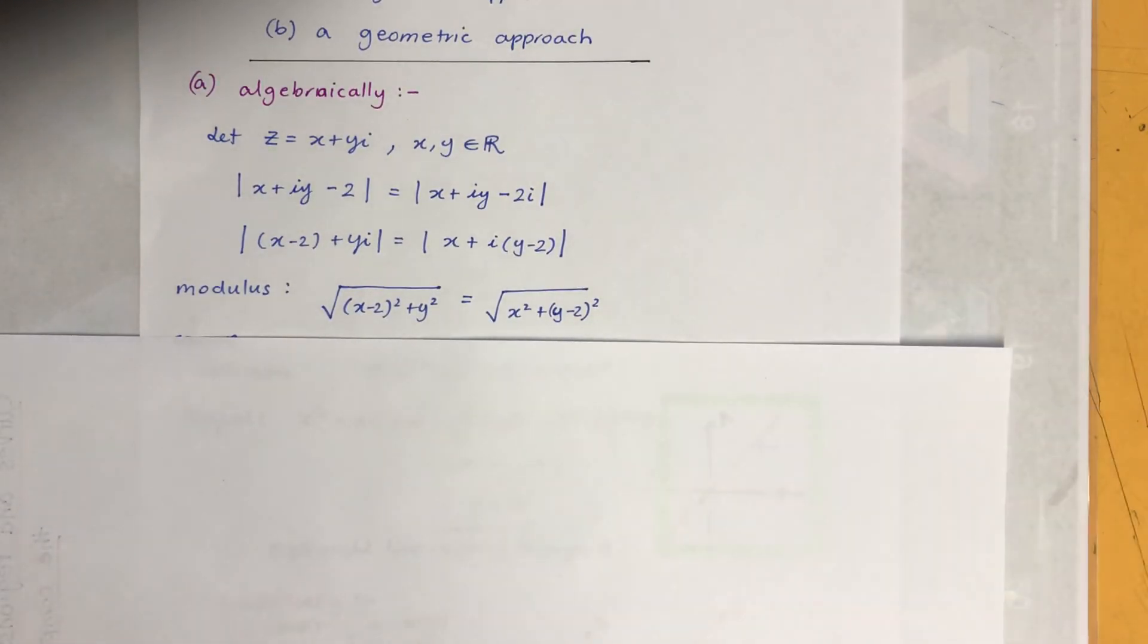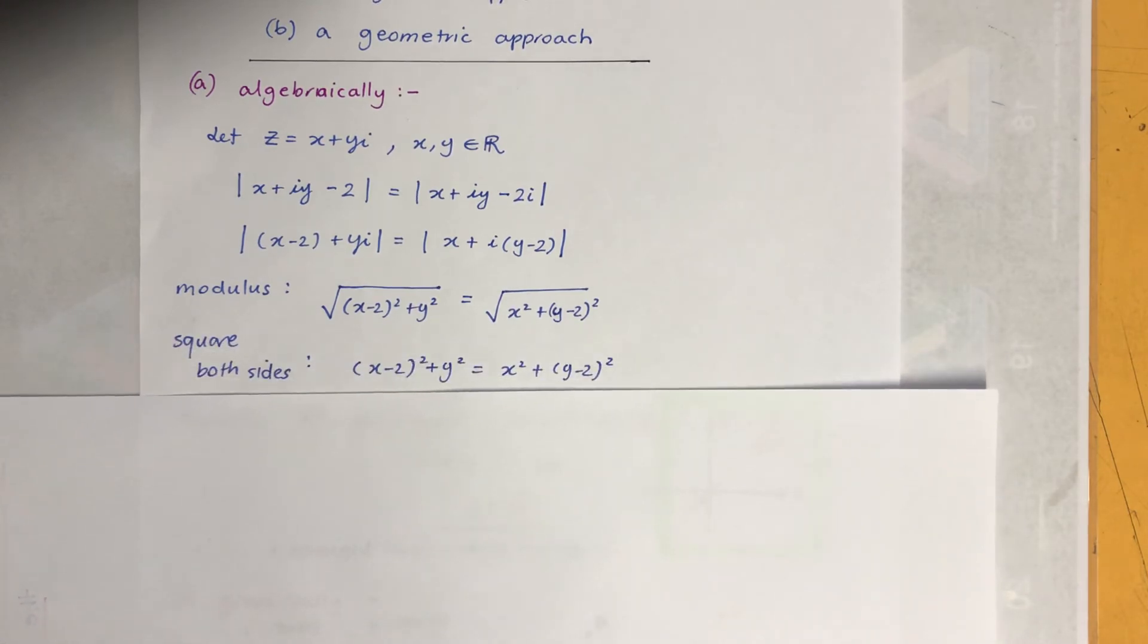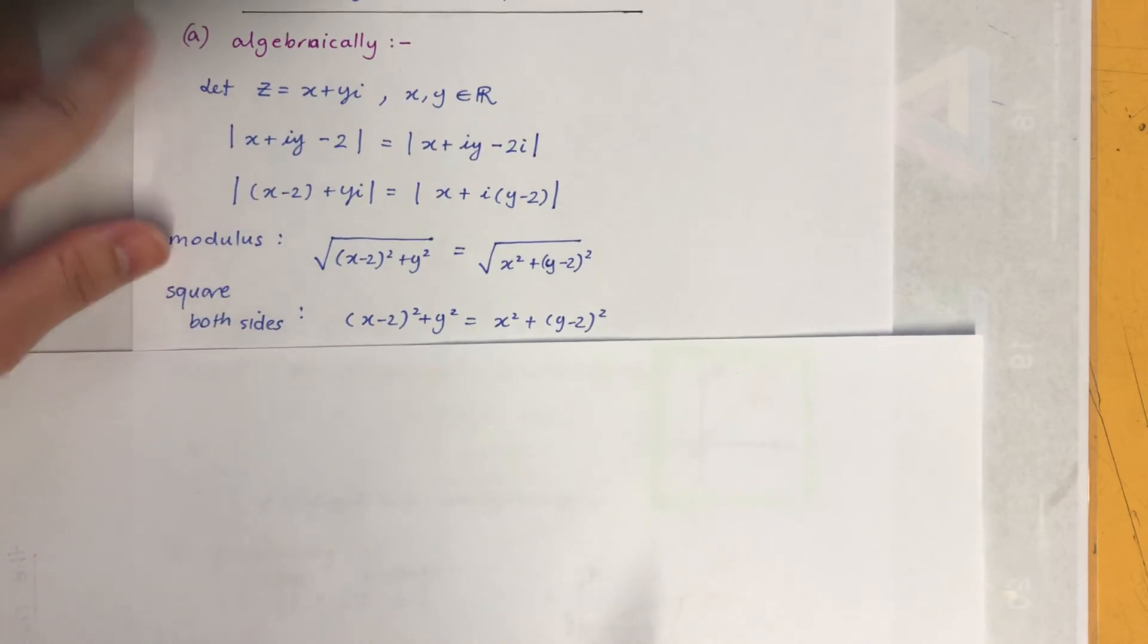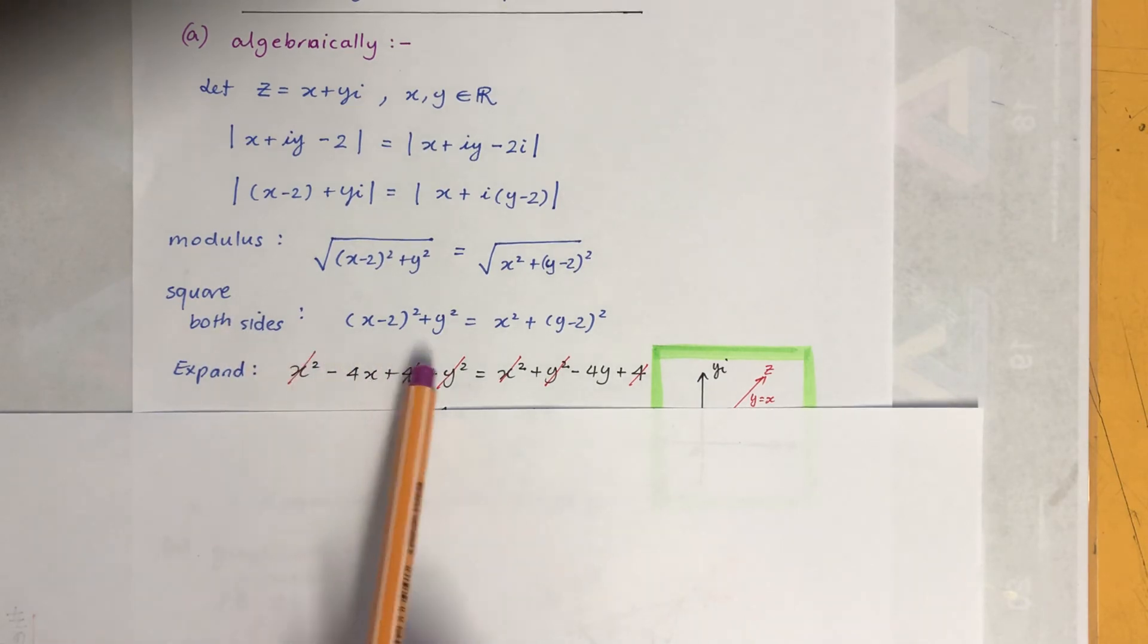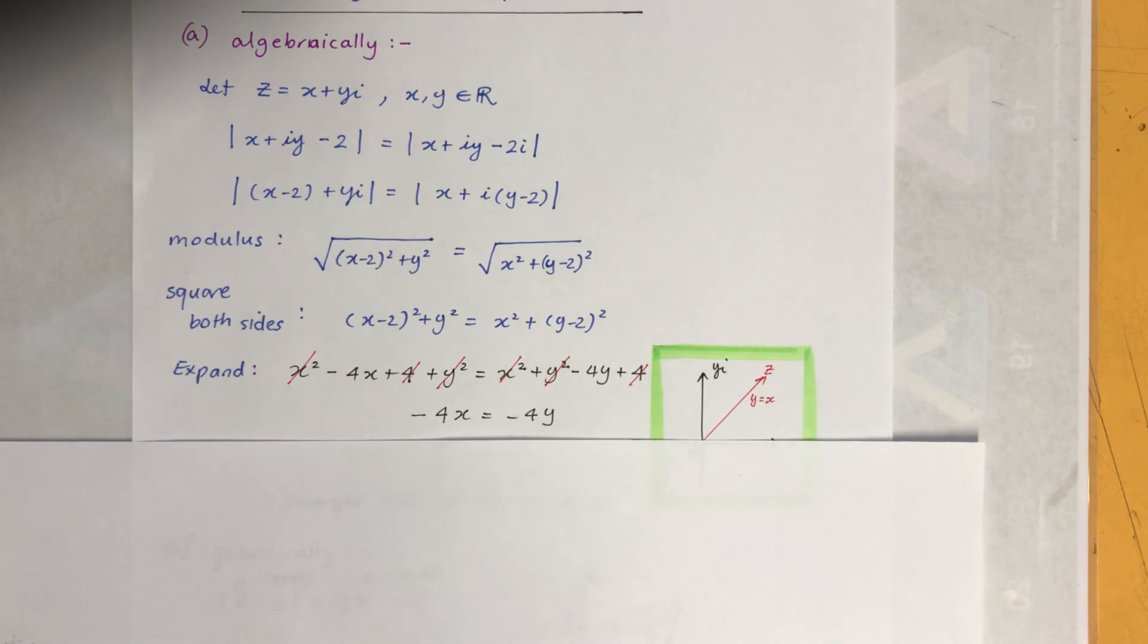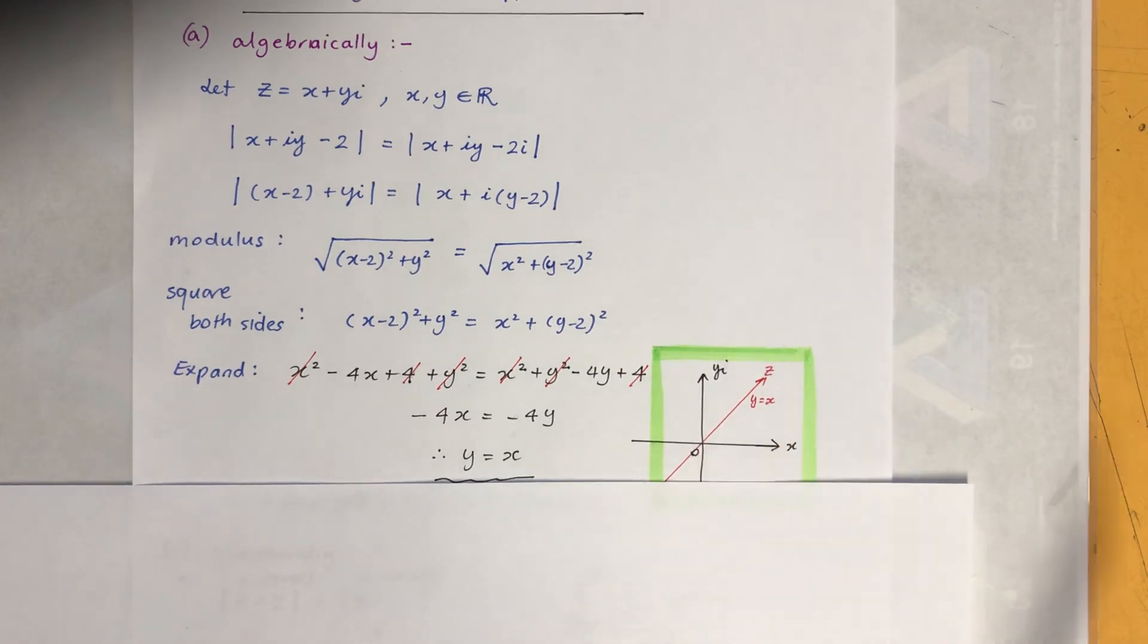And then I'm going to find modulus. You can see the pattern happening, so the more you do the questions, you'll get into automatic mode. Okay, so we got this and then I'm just going to expand this one. And you can see already cancel them out as I expand it, and then you're left with this, and it'll be the straight line Y equals X.